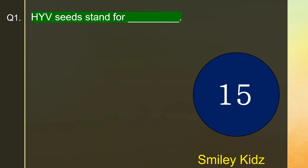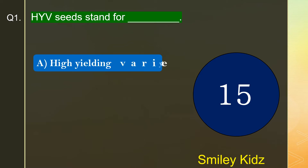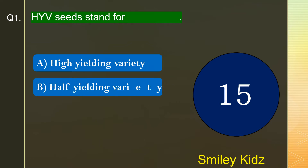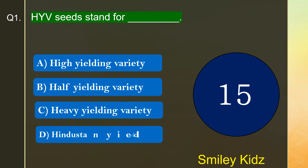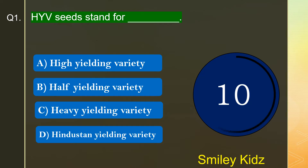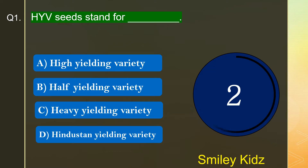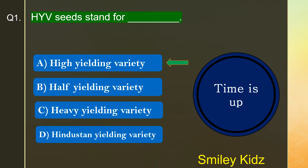Question number 1. HYV seeds stand for dash. The options are A. High Yielding Variety, B. Half Yielding Variety, C. Heavy Yielding Variety, or D. Hindustan Yielding Variety. Your turn starts now. Your turn is up and the right answer is option A.